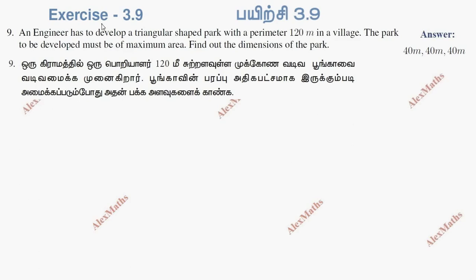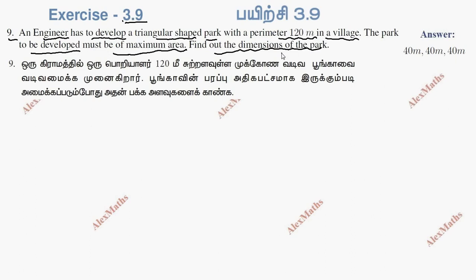Hi students, this is Alex here, exercise 3.9, question number 9. An engineer has to develop a triangular shaped park with a perimeter of 120 meters in a village. The park to be developed must be of maximum area. Find out the dimensions of the park — if you have the dimensions of the park, the maximum area will be fixed.